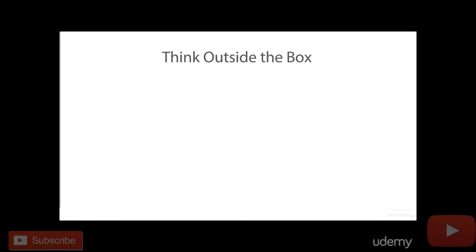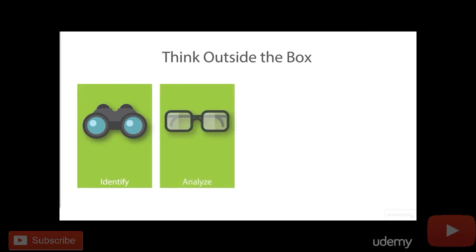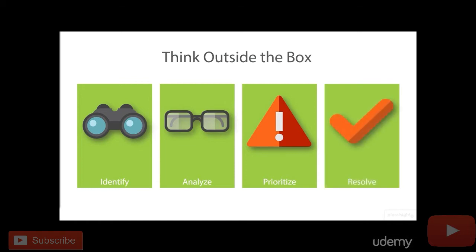We need to come up with some processes to help us to, one, identify issues that could be taking place. After we identify those, we need to then analyze what exactly happened. We then need to go through and prioritize different types of issues or security incidents, because some may be more important than others or have bigger ramifications. And finally, we need to make sure we come up with some type of way to resolve those issues.